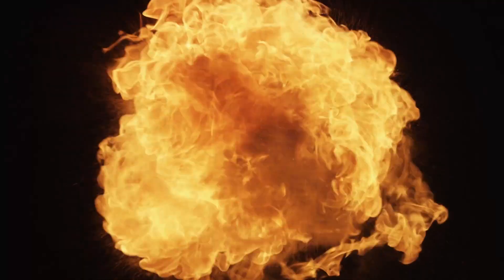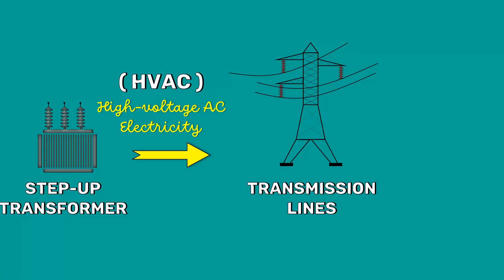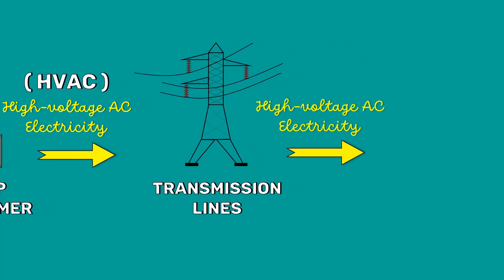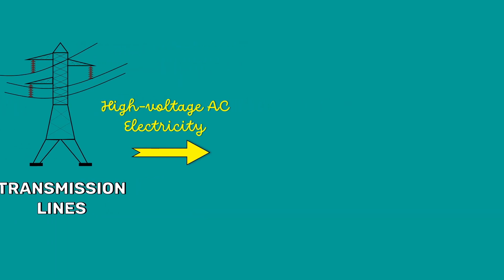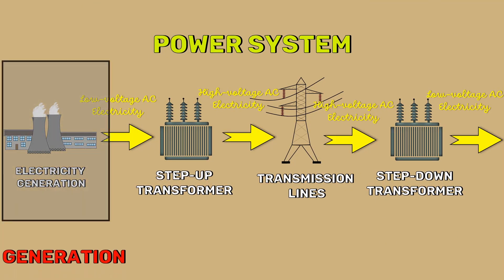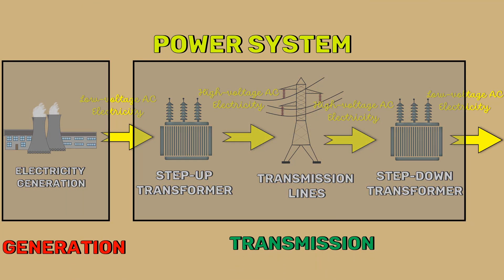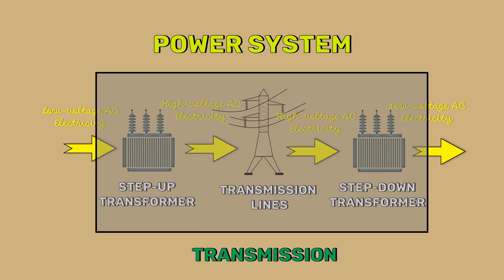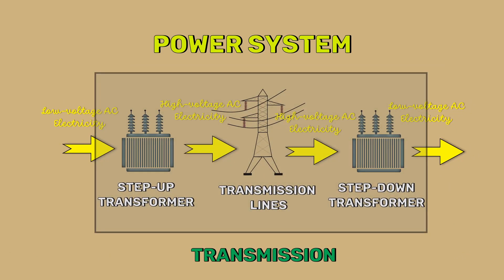As a consumer, we cannot use this high voltage electricity. All our electrical devices may even burst into flames if an over-voltage is delivered to our circuit. So, before distributing, the high voltage is converted into low voltage using a step-down transformer. The power system has generation, transmission, and distribution. This is the typical high voltage AC or HVAC transmission.